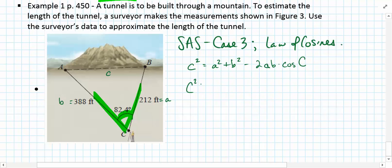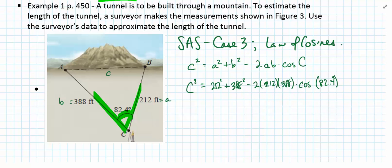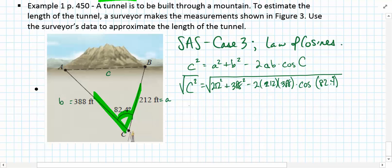So when I set this up, c squared would equal 212 squared plus 388 squared minus 2 times 212 times 388 times cosine of 82.4 degrees. Therefore, c by itself would equal the square root of that, because I could take the square root of both sides, and we can come up with a nice result.